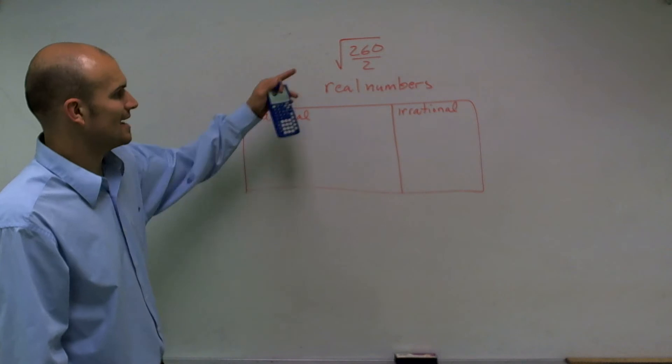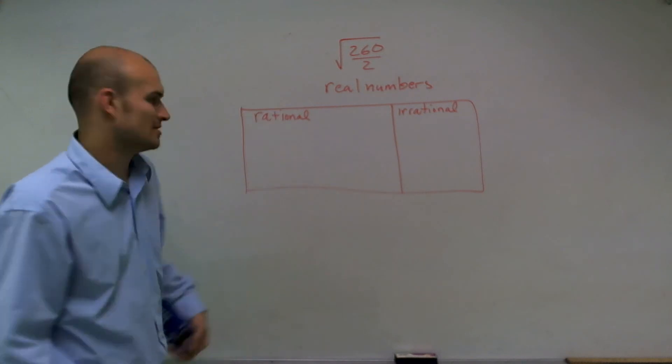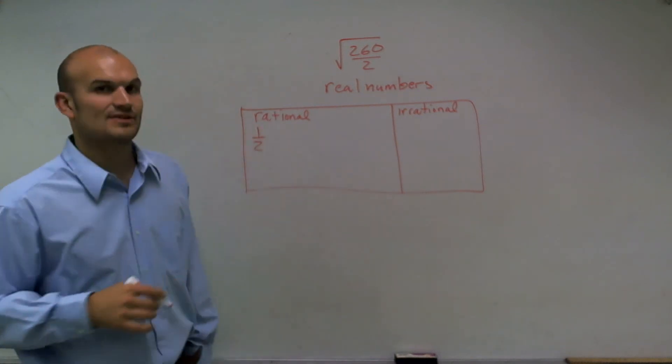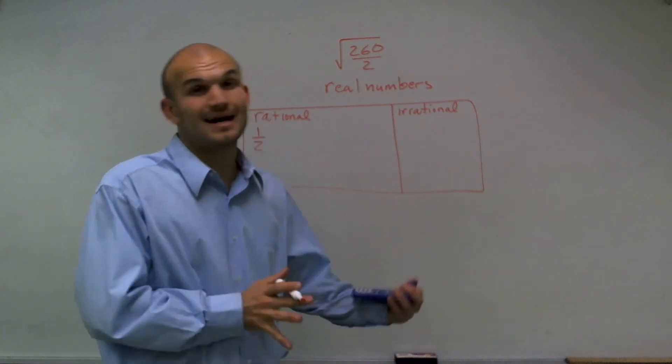And what I'm going to do is I need to determine what exactly is a rational number. Well, a rational number is really anything we can write as a fraction and write it on a sheet of paper.